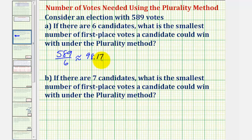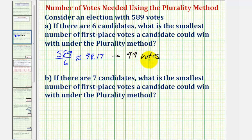We know we can't have a fractional or decimal part of a vote. This decimal part is indicating that one vote is being split between the six candidates. So if one candidate was to receive that vote they're splitting — ninety-nine votes — this would be the smallest number of first place votes a candidate could receive and win using the plurality method. In this situation, five of the candidates would receive ninety-eight votes, and one would receive ninety-nine.